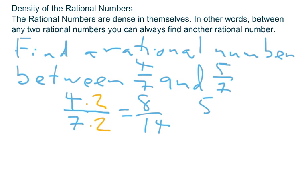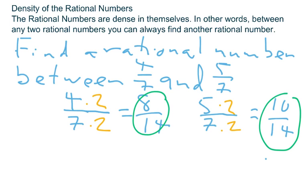Five-sevenths, if I multiply numerator and denominator by two there, would give me ten-fourteenths. And when you realize that these two fractions are equivalent to the ones that we started with, then you can see, oh, well, pretty obvious what a rational number is between those.